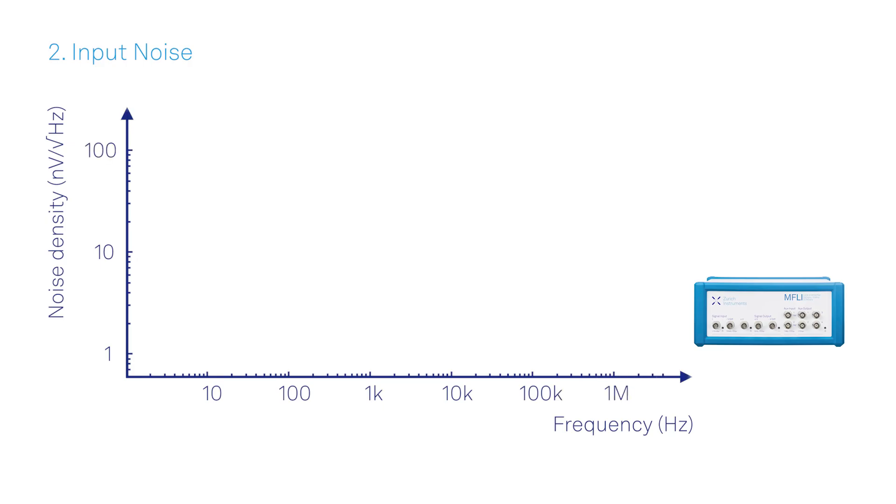Now let's take a look at the instrument's input noise. It needs to be low to measure small signals with a high signal-to-noise ratio. Manufacturers characterize the voltage noise density versus frequency. It can be as low as 2.5 nV per square root hertz, as in this example.